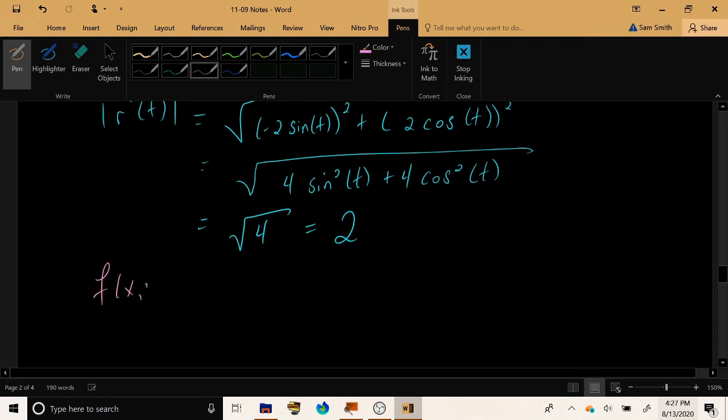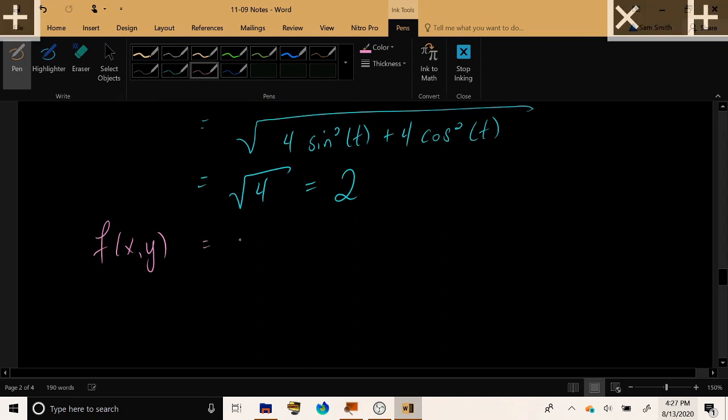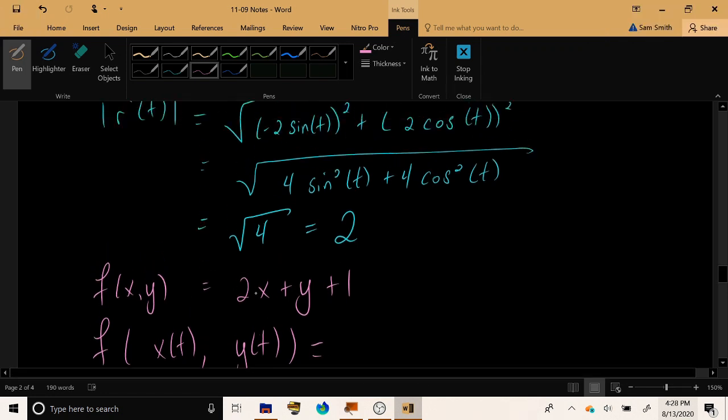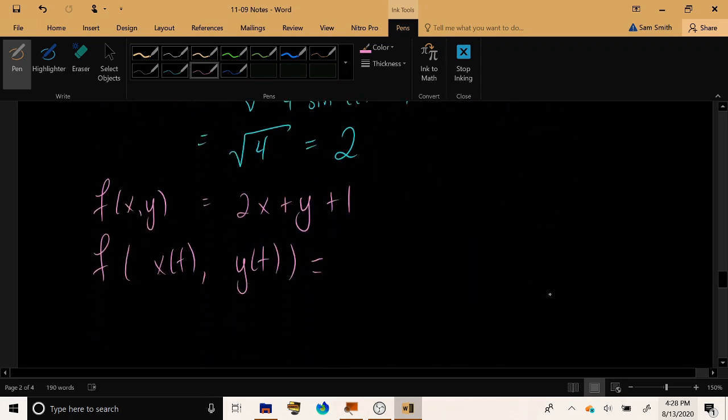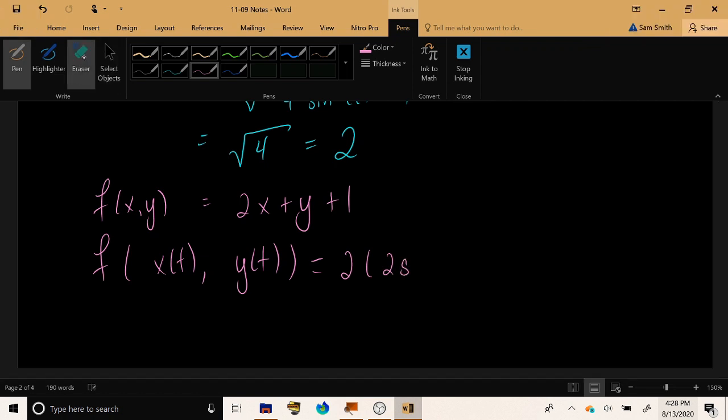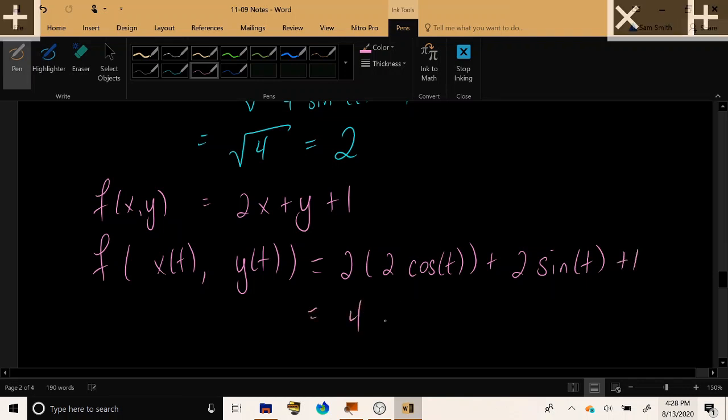Finally, with f of x, y equal to the given function 2x plus y plus 1, let's find f of x of t, y of t. In other words, everywhere we see an x in the formula, let's replace it with the x of our parametrization. And every time we see a y in the formula, let's replace it with the y of our parametrization. So, not 2x, but 2 times 2 cosine t in x's place. Not plus y, but now plus 2 sine t. Which simplifies to 4 cosine t plus 2 sine t.